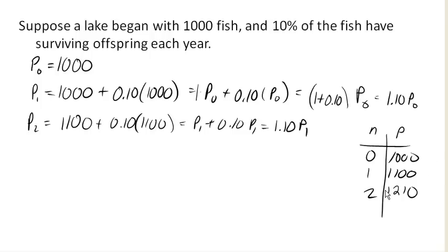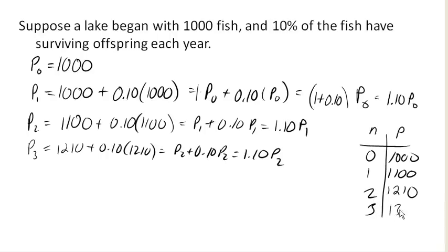If I continue this trend, the next year would be 1,210 plus 10% of 1,210, which is P₂ plus 0.10 P₂. Which again, I could factor out and get 1.10 times P₂. And you're probably noticing the trend here. If we calculated that out, that'd be 1,331, which is, again, more of an increase than the year before.